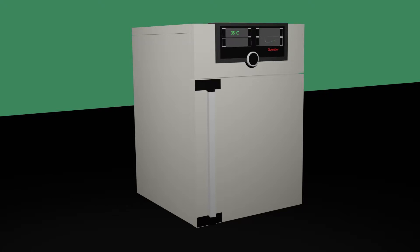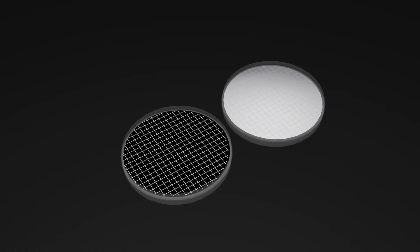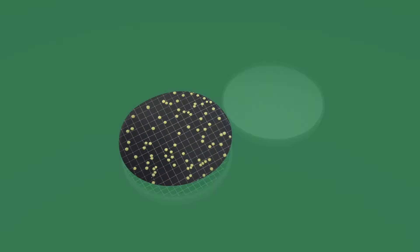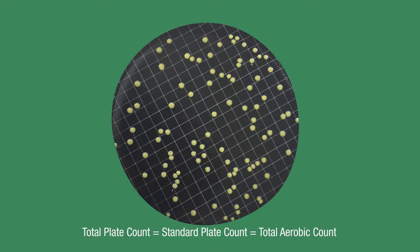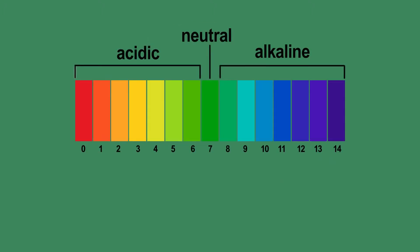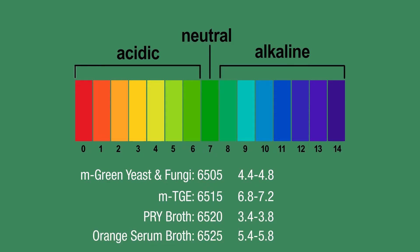After incubating the filter unit at the specified temperature for the recommended amount of time, remove the unit for counting. When testing using a non-selective medium to obtain a total plate count, all colonies that grow must be counted and reported. A total plate count is also referred to as standard plate count or total aerobic count. Non-selective media can differ in pH, which promotes the growth of different types of organisms.